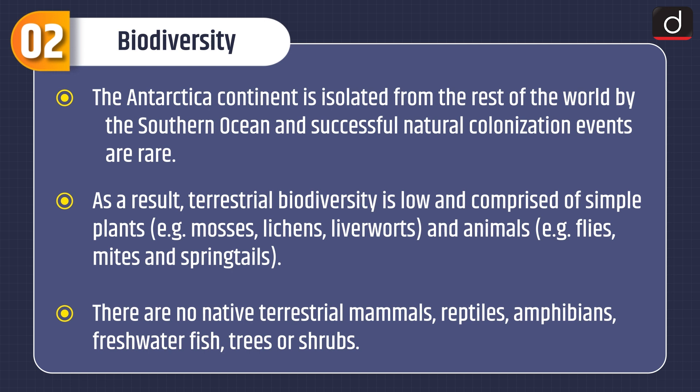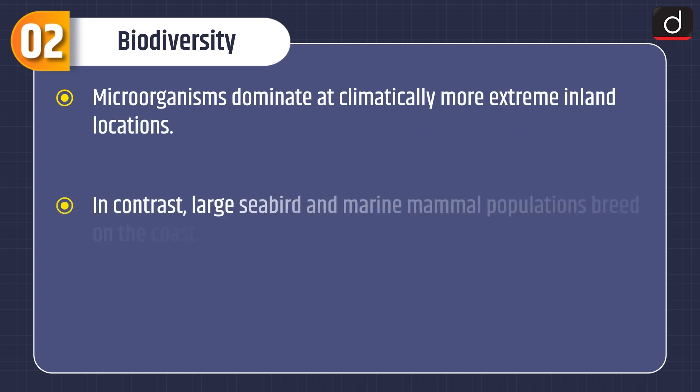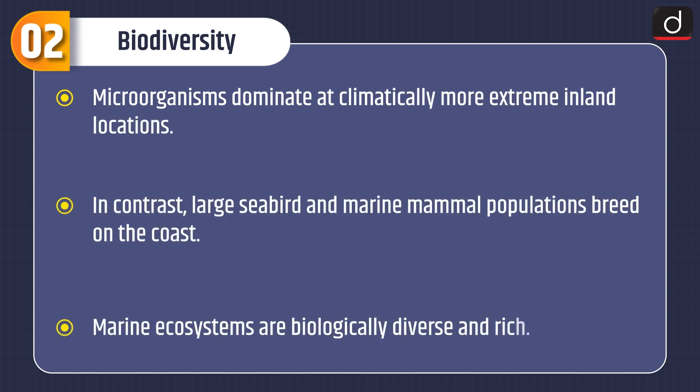The Antarctic continent is isolated from the rest of the world by the Southern Ocean, and successful natural colonization events are rare. As a result, terrestrial biodiversity is low, comprising simple plants such as mosses, lichens, and liverworts, and animals such as flies, mites, and springtails. There are no native terrestrial mammals, reptiles, amphibians, freshwater fish, trees, or shrubs.